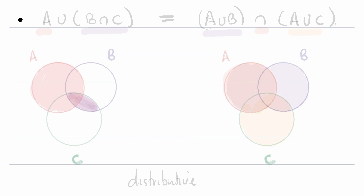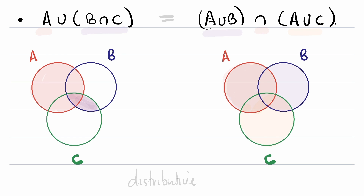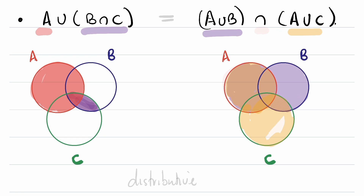It becomes more complicated once we start combining unions and intersections. Let's look at A union (B intersect C) versus (A union B) intersect (A union C). In purple I'll put B intersect C, and in red I'll put A. Then in purple I'll put A union B, and in yellow A union C. The intersection of those two sets lands in the same region. After all that, we see these two sets are actually equal — this is the distributive property.